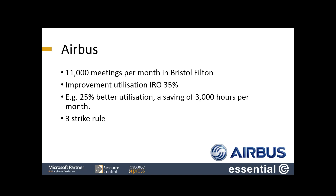We're going to start with Airbus. Airbus recently completed a multi-million pound development at Aerospace Park in Bristol. It's home to four and a half thousand staff, and there are 11,000 meetings per month at the Bristol site. There were 11,000 meetings a month before the site was developed, and there are still 11,000 meetings a month required now. The difference — and here's the challenge — is that the new site has actually got 33% fewer meeting rooms than before.